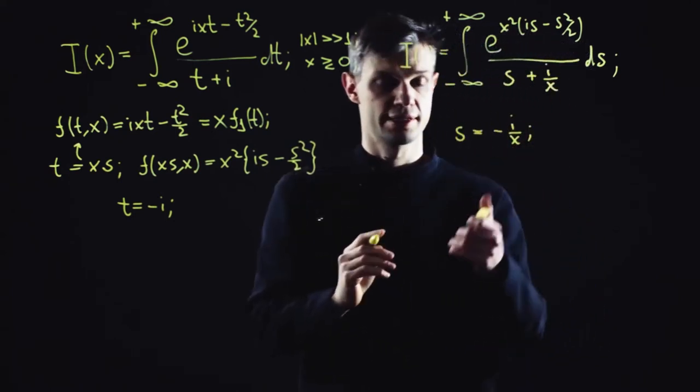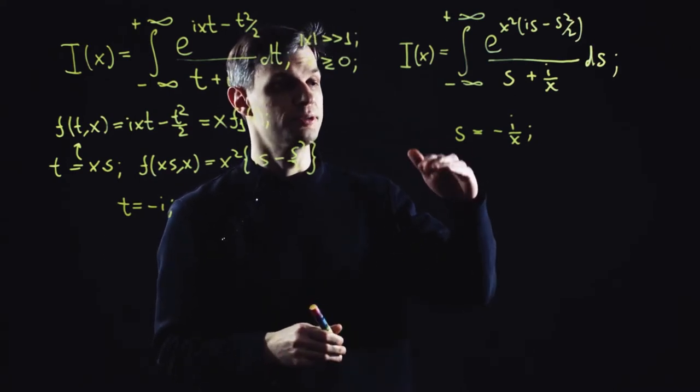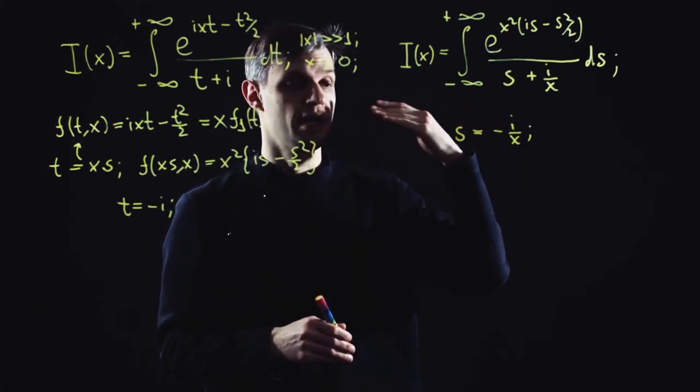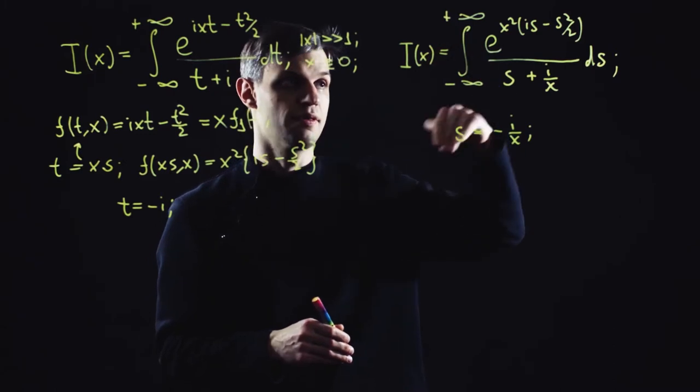For example, if x is positive, then the pole is positioned below the real axis of the s complex variable. When x is negative, the pole is shifted above the real axis.